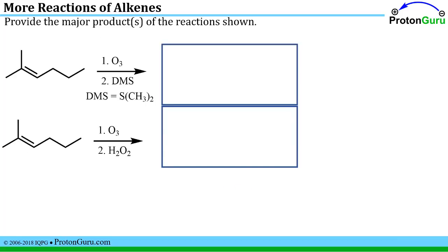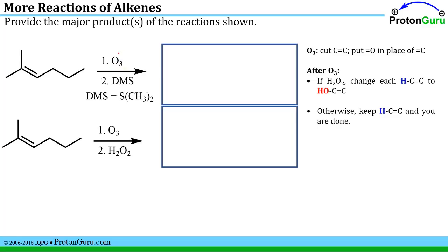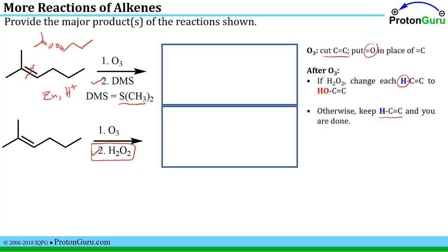The final reaction in this section is ozonolysis. Ozone is O3, and this reaction differentiates itself from all other alkene reactions because you actually cut the carbon-carbon double bond. You put a double bond to O in place of the double bond to C, so each fragment makes a new C=O where there used to be a C=C. Some books require you to know two different workup procedures. If you see DMS (dimethyl sulfide) or zinc with acid or water, you don't change the H's on the alkene carbons. But if hydrogen peroxide is used as the second step, all hydrogens attached to the double bond carbons will become OH's because it's an oxidizing workup.